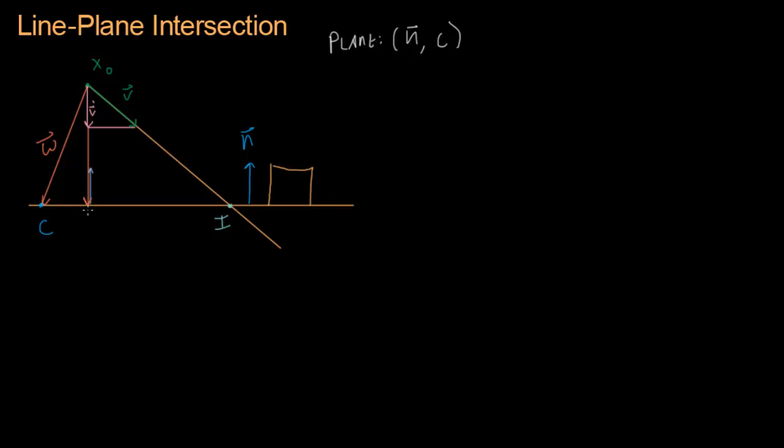We're going to project that onto the plane as well, and we'll get this vector right here. It goes all the way from x-naught to the plane. I'm not going to draw this part because that's covered up by v-prime, but this will be w-prime. So w gets projected onto the normal, and we get w-prime, and v gets projected onto the normal, and we get v-prime.